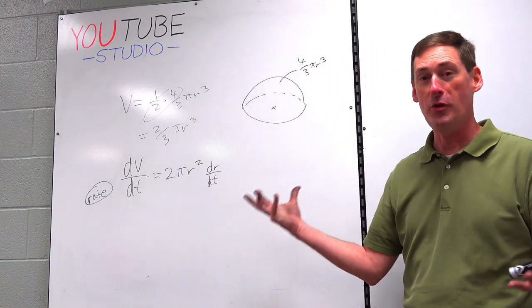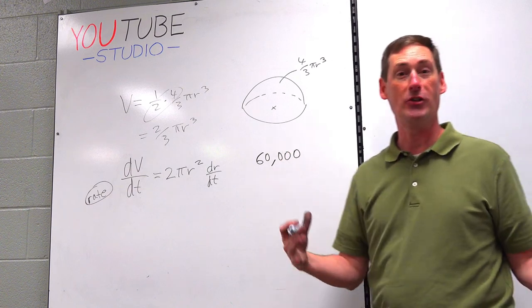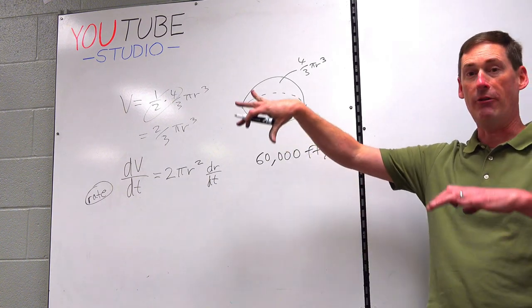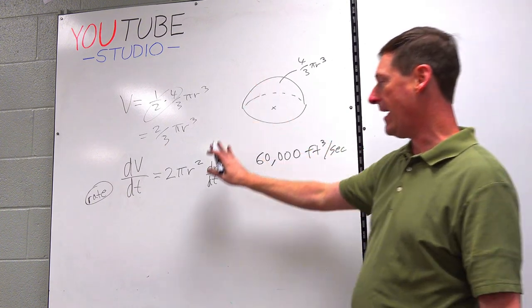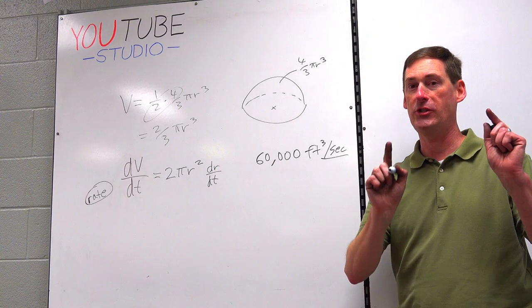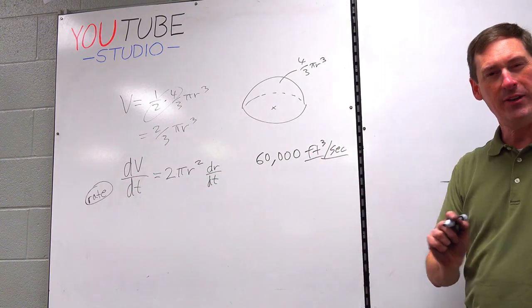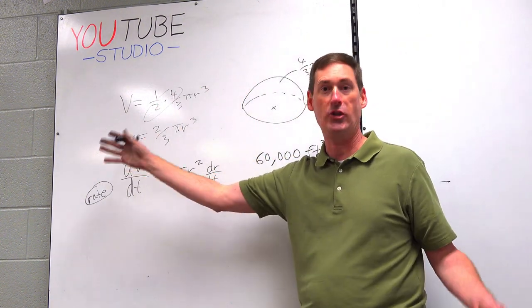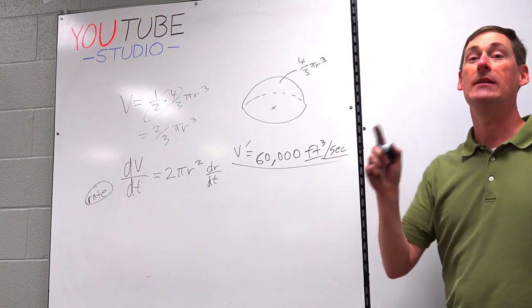All right, so do we have any clues that we can plug into this equation? Well, we have that one clue from the internet. The only thing I can find out there on skunks mathematically, 60,000 cubic feet per second is how fast this hemisphere of stink is growing, right? So where do we put it? Is that r prime? Is that r? Or is that V prime? Well, it's per second. Per anything means it's a rate, means it's a derivative. So it's either r prime or V prime. Hey, cubic feet, it's three-dimensional. If it's three-dimensional, that means that it is the volume changing. Clearly, it's not the radius changing. It's definitely V prime or dV/dt.